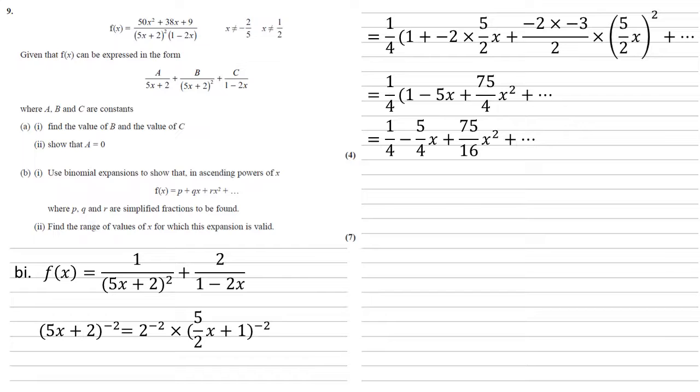The second fraction, the 2 over 1 minus 2x, we can do the same thing, so 1 minus 2x to the minus 1. Expanding it, we get the 1 in the first term plus our power of minus 1 times by the x term minus 2x.